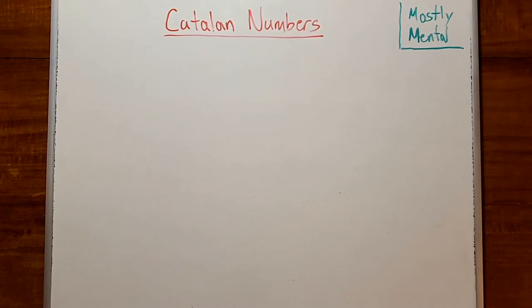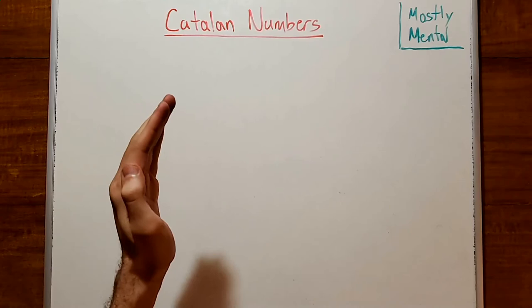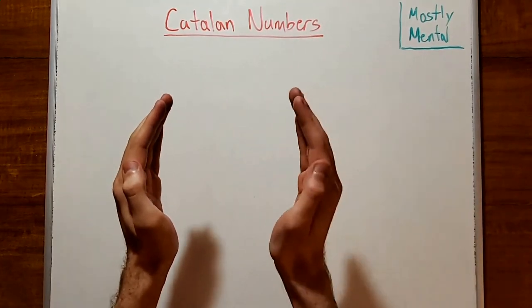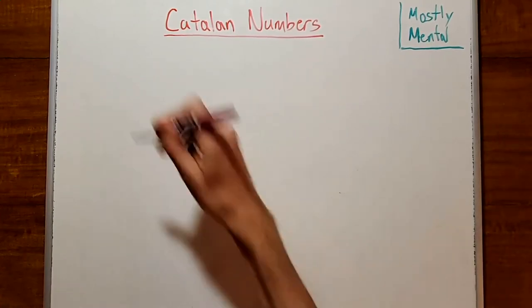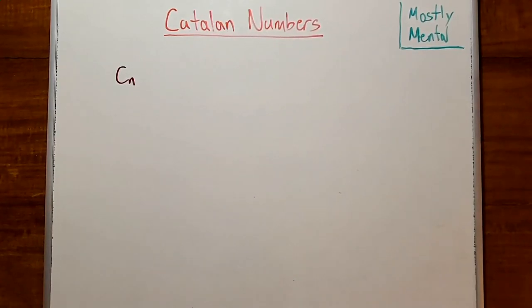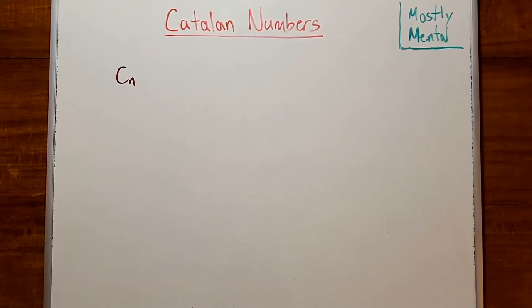You can find the Catalan numbers in a lot of places, really a lot, but one of the most natural is in counting balanced strings of parentheses. A string of parentheses is called balanced if every open paren is matched somewhere later with a corresponding close paren, with no extras or mismatched parentheses anywhere. And the Catalan numbers C sub n count the number of balanced strings with n open paren and n close paren.